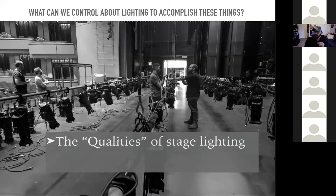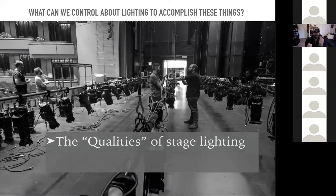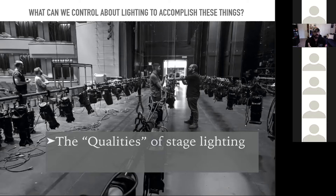So that was the 14-minute version of the functions of stage lighting. Hopefully most of you, if you've had a lighting class before, you've heard of those things. The next thing we're going to talk about is the qualities of light — the various parameters or attributes or features of light that we can manipulate in order to fill those earlier functions.